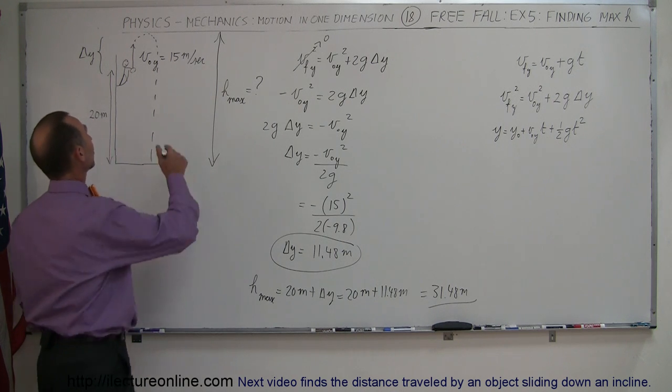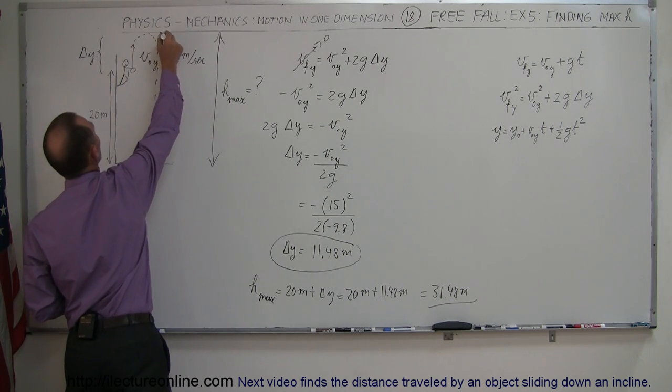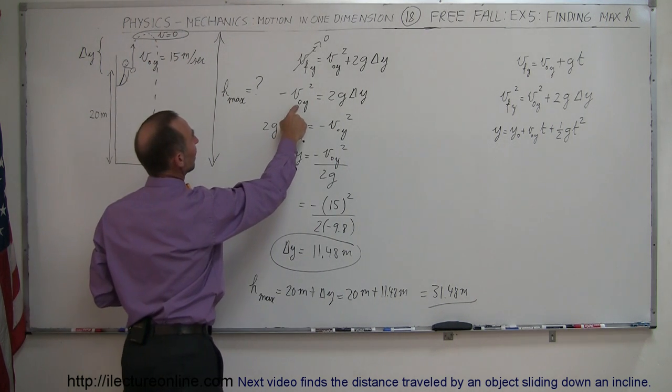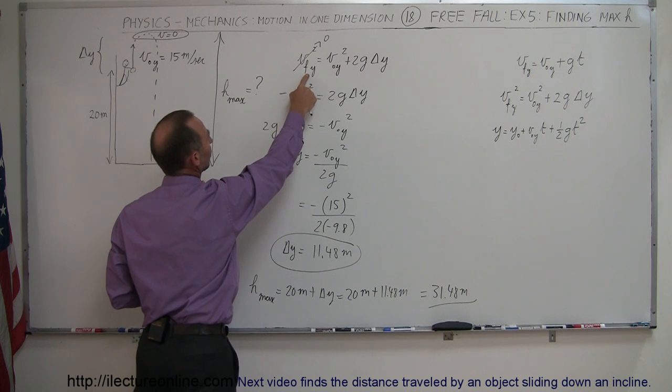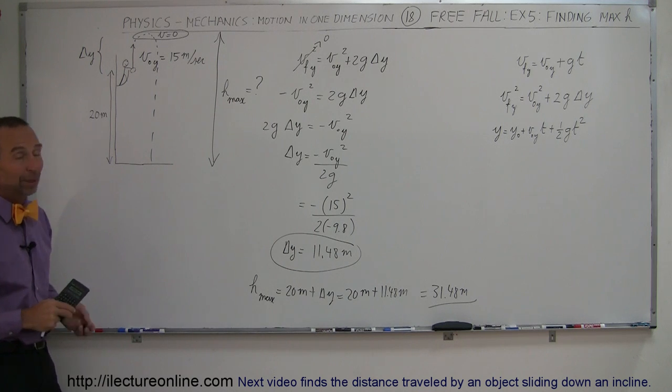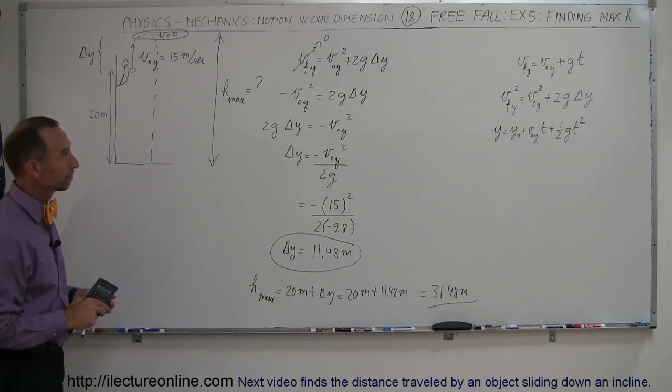So to find maximum height, the assumption is at the very top right here, V equals 0. At the very height before it comes back down, you use that information to eliminate the V final right there, turn it to 0. And then there's only one unknown left in there. You can solve for your delta Y. And that's how you do that problem.